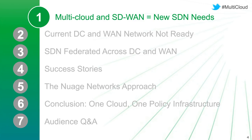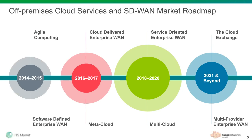We'll take a look at the actual Nuage Networks products that make those success stories real, and wrap up with a short conclusion. IHS Market has been following both the cloud services market and the software-defined enterprise WAN market since its inception. Going back a bit, we had the phase where the cloud was all about agile computing, which meant enterprises needed to rethink their WAN architectures. Previous and today's traditional architectures are branch office to corporate and corporate to internet — the cloud is sort of wrapped into the internet.